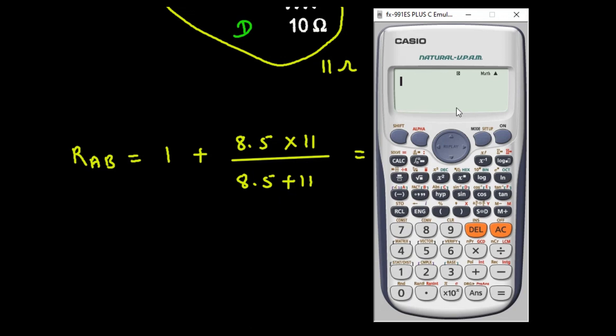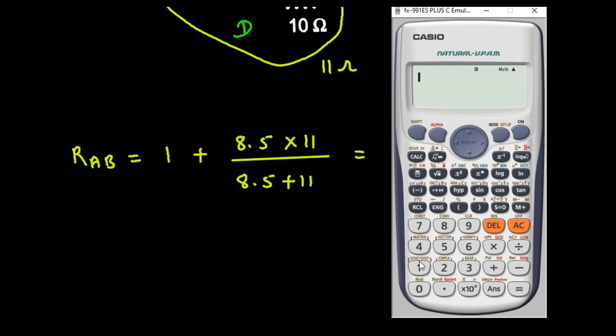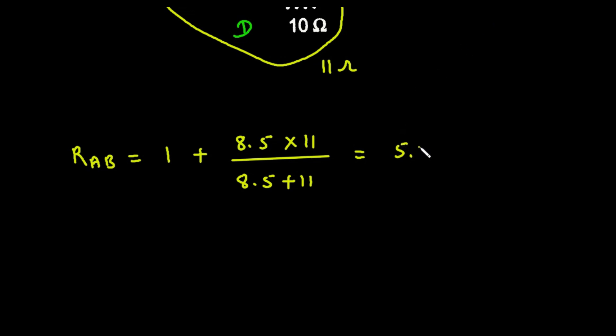So let's solve this in calculator directly. So 1 plus 8.5 multiplied with 11 divided by 8.5 plus 11. So it is basically 5.79. So 5.79 ohm is the answer for R AB.